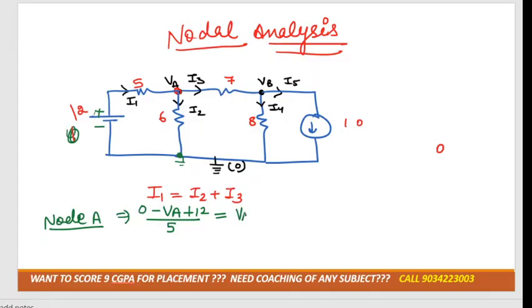Va minus 0 divided by 6, because I is equal to V by R. Then in that case, I3 would be equal to Va minus Vb divided by 7. So we are having two variables and two equations. We can solve it in terms of Va, then Vb, and then equal to the constant term.